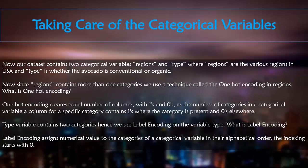Type variable contains two categories, hence we use label encoding on the variable type. Now what is label encoding? Label encoding assigns numerical value to the categories of a categorical variable in their alphabetical order. The indexing starts with zero.